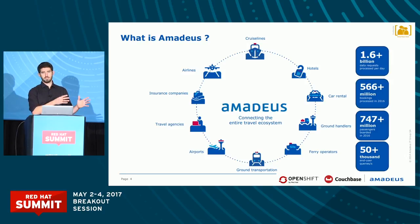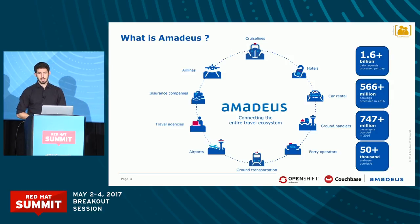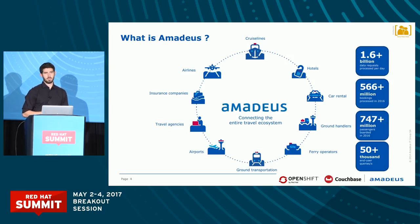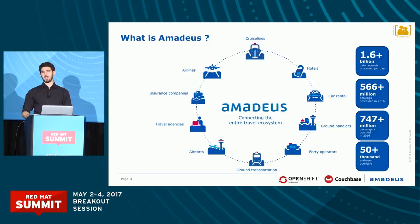End-user really means the traveler. But you can imagine that in our systems, each single query from an end-user can translate to hundreds of queries internally. Just to give you a quick number: on our availability cache that is running on Couchbase, we take about three million queries per second. So that's a lot of traffic.